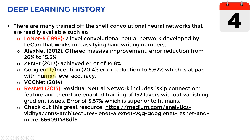Then came GoogLeNet and InceptionNet in 2014, reducing the error to 6.67%, followed by VGGNet also in 2014. Then ResNets in 2015 — super powerful, state-of-the-art convolutional neural networks with over 152 layers, achieving an error of 3.57%, which is essentially superior to human performance. The two highlighted in red — LeNet and ResNets — are the ones I'll be focusing on when we visualize our networks today. There's also a great article available if you want to read more about different architectures.